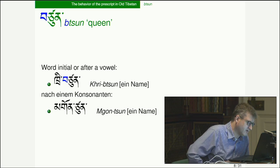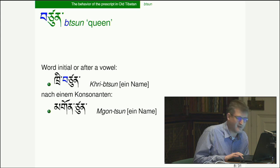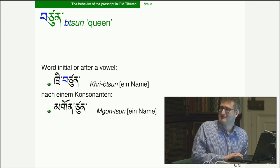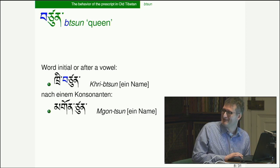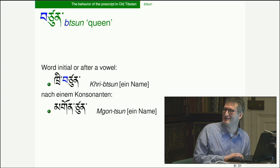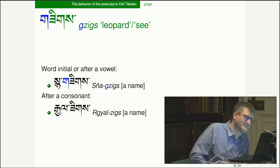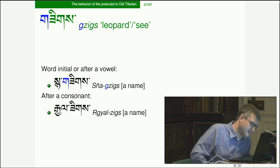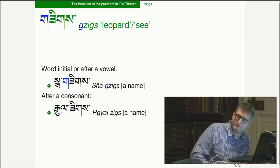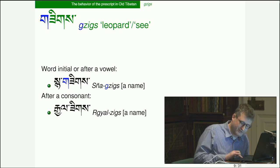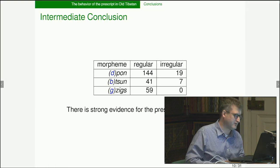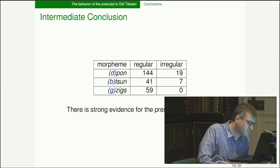Looking at 'queen': word-initial and after a vowel you keep the 'b,' but word-internal after a consonant you lose the 'b.' I gave this talk in Germany and thought I had cleaned it up into English, but apparently not entirely. Now looking at 'zik,' meaning leopard: in 'snyah gziks' you keep the 'g' after a vowel word-internally, but delete the 'g' word-internally after a consonant.